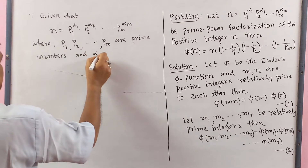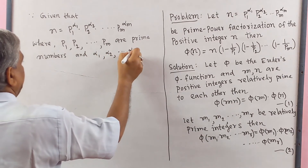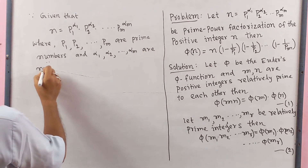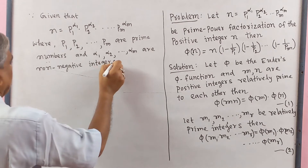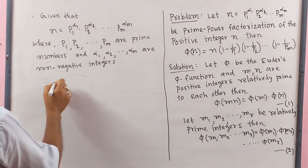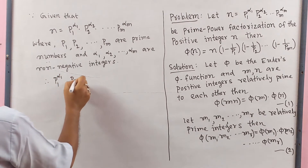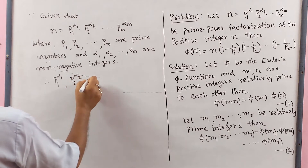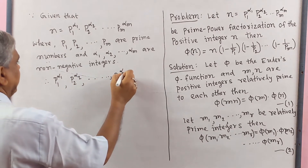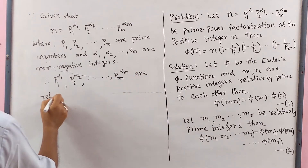And alpha1, alpha2, dot dot dot alpha m are positive integers greater than or equal to 1. So P1 to the power alpha1, P2 to the power alpha2, dot dot dot Pm to the power alpha m are relatively prime integers.